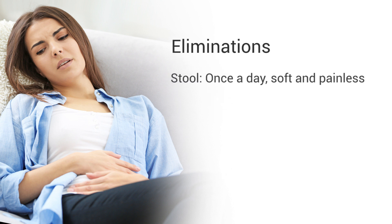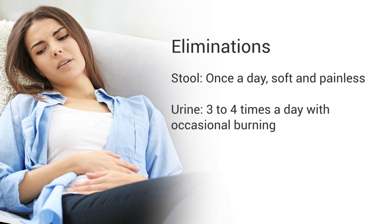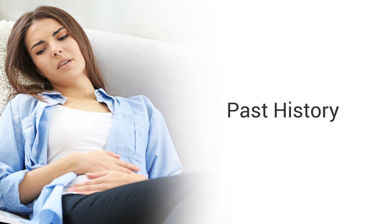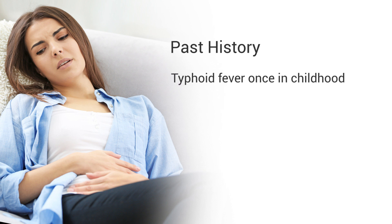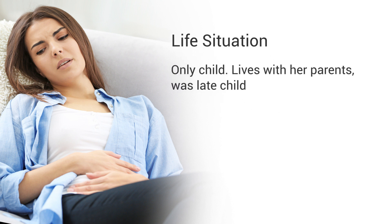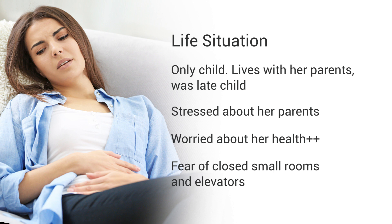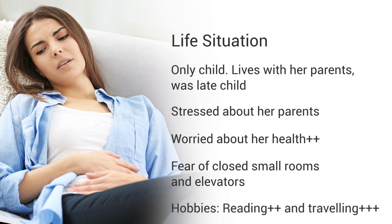Eliminations: stool once a day, soft and painless. Urine 3 to 4 times a day with occasional burning. Perspiration moderate, non-offensive, and more in armpits. Past history: typhoid fever once in childhood. Life situation: only child, lives with her parents, and she was a late child. Stressed about her parents. Worried about her health 2+. Fear of closed small rooms and elevators. Hobbies: reading 2+, and traveling 3+.